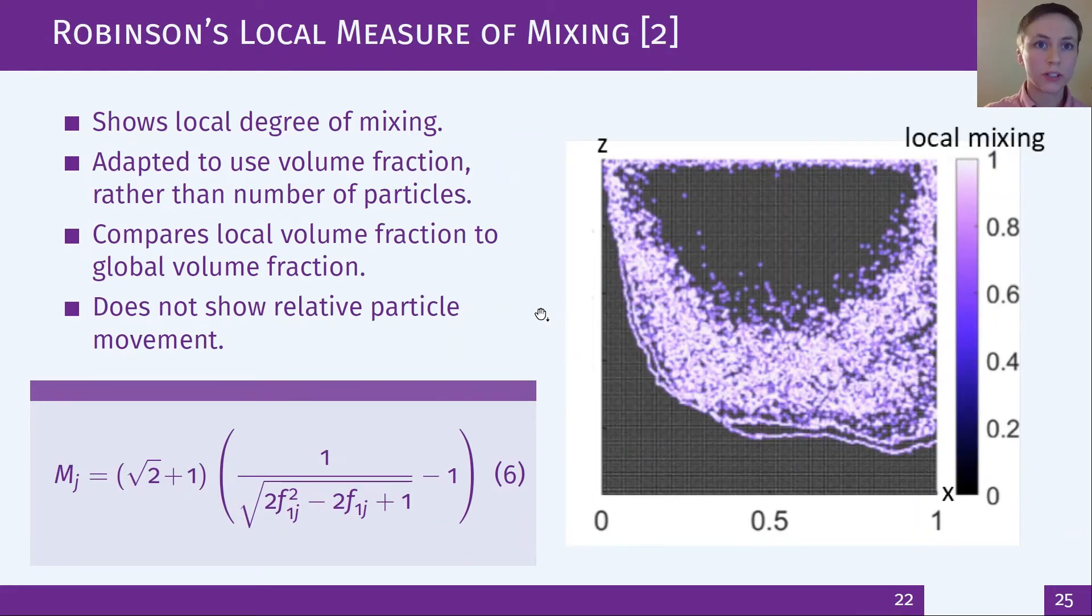Next, Robinson's local measure which I adapted to use the volume fraction. It highlights where the local volume fraction is close to the overall volume fraction therefore where mixing has occurred but it does not show relative particle movement again.